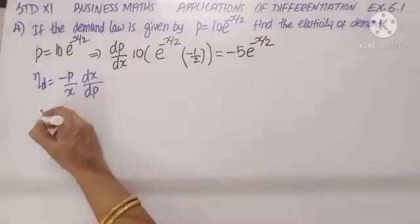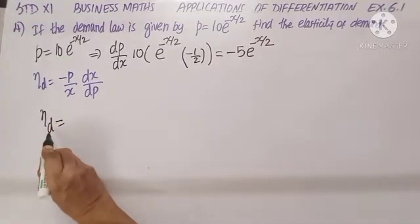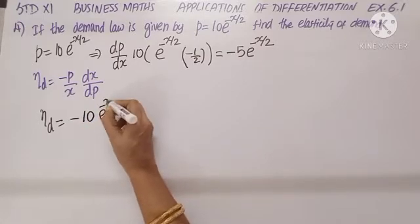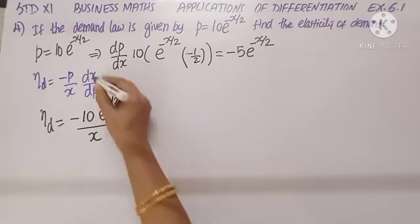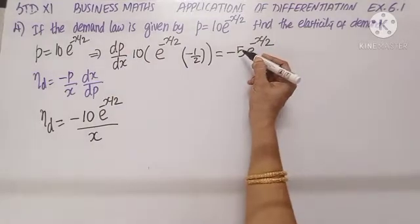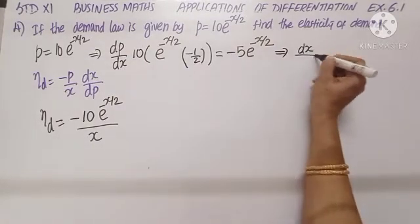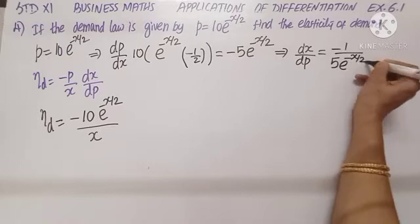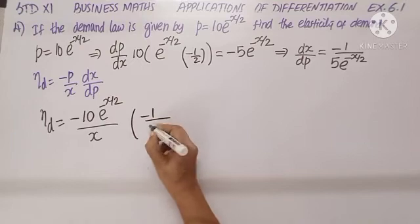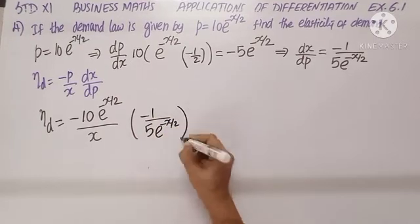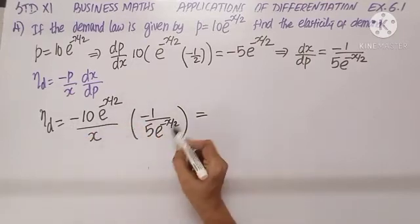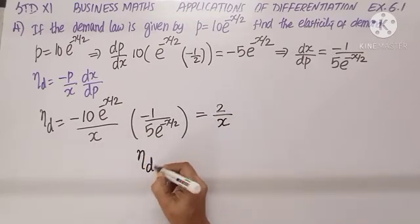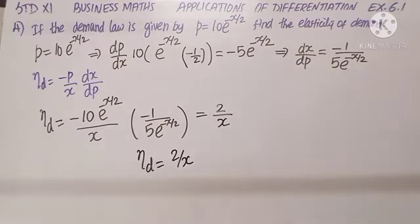Substituting in the elasticity of demand formula, eta_d equals minus p by x times dx by dp. p is 10e^(−x/2), and dx by dp is the reciprocal of dp by dx, which is minus 1 by 5e^(−x/2). Cancelling the minus signs and the exponential terms, we are left with 10 by 5 equals 2 in the numerator and x in the denominator. So elasticity of demand is 2 by x.